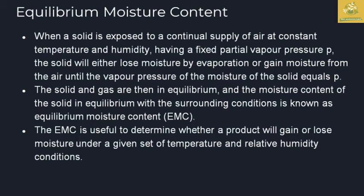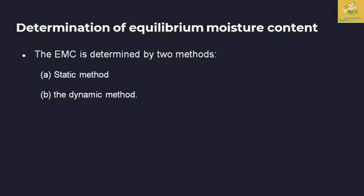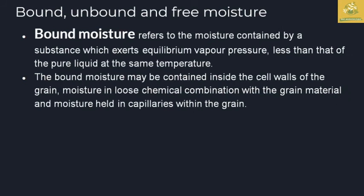The next topic is equilibrium moisture content (EMC). This is defined as the moisture content of a solid that is in equilibrium with the surrounding gas or environment. EMC is useful to determine whether a product will gain or lose moisture under given conditions of temperature and relative humidity. EMC is directly related to drying and storage of produce and depends on temperature and relative humidity. It can be used to measure different varieties and maturities of grains. For determination of EMC, there are two methods: the static method and the dynamic method.